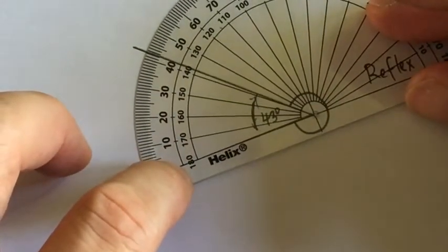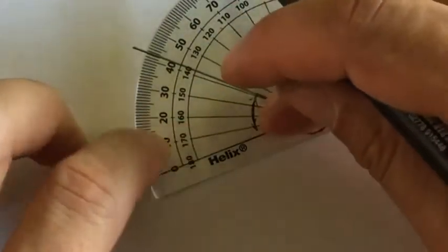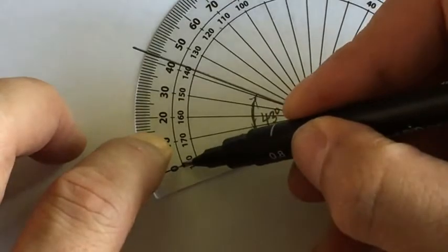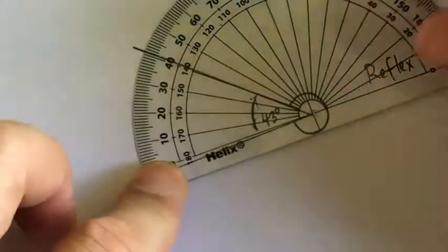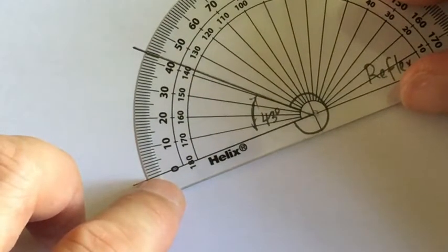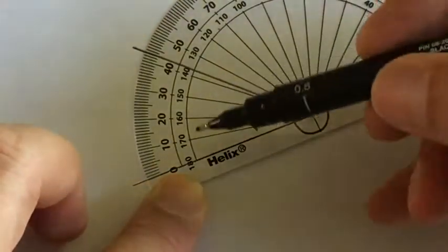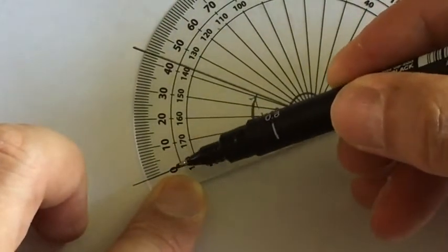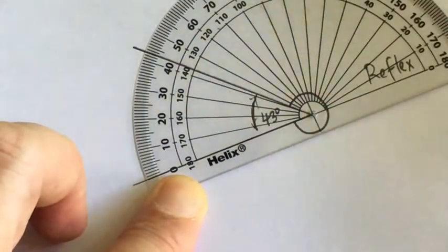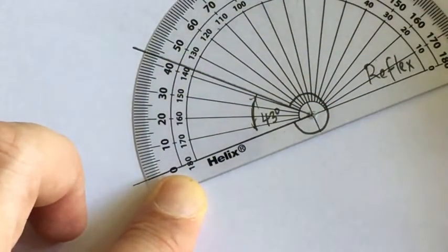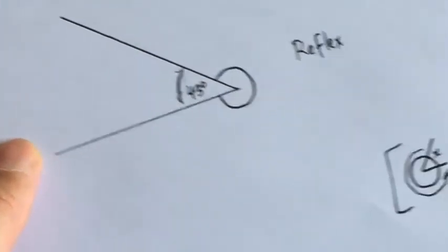From here, I'm starting on zero on the outside here, so I follow this around. I'm not looking here at the 180; I'm starting at zero. Let me just get that perfect again. So I start at zero and I work around: 10, 20, 30, 40, 1, 2, 3. So that's 43.